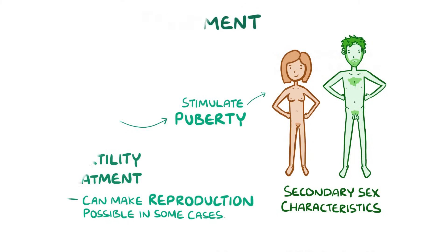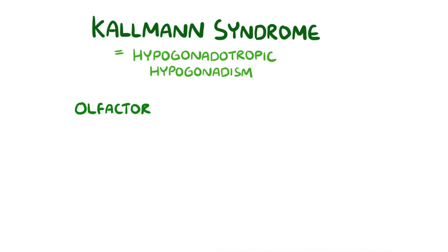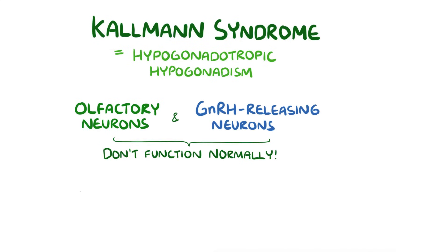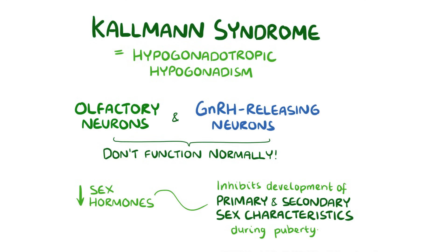To recap, Kallmann syndrome is a type of hypogonadotropic hypogonadism, where olfactory neurons and gonadotropin-releasing hormone neurons don't function normally. The decrease in sex hormones inhibits the development of primary and secondary sex characteristics during puberty.